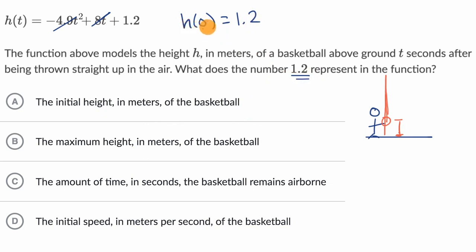So if you think about it, h of zero tells you the position of the ball in terms of meters above the ground, right when we are starting. So it's telling us the initial height of the ball.